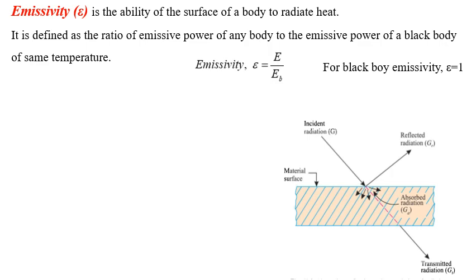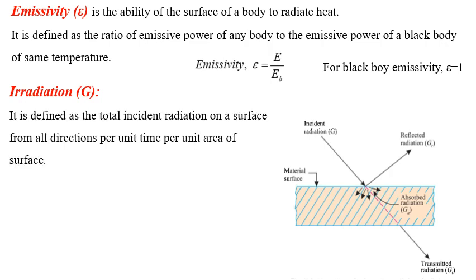Next we will study irradiation G. Irradiation is defined as the total incident radiation on a surface from all directions per unit time per unit surface area. It is the total radiation energy incident per unit area per unit time over the entire wavelength from all directions, denoted by G and measured in W/m².